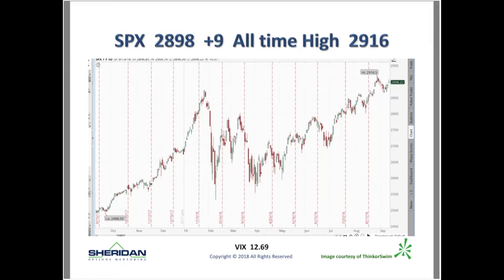SPX is around 2898 when I took this slide, within spitting distance of the all-time highs of 2916 — about 18 points away. Right now as we speak, SPX is at 2903, so we're within 13 points of the all-time high in the history of civilization. We'll talk during the class about how to match market conditions — the price levels of SPX, the VIX levels, the speed of the movement, how big the candles are, how fast it's moving — to determine the proper Greeks, the type of calendar, and the duration.